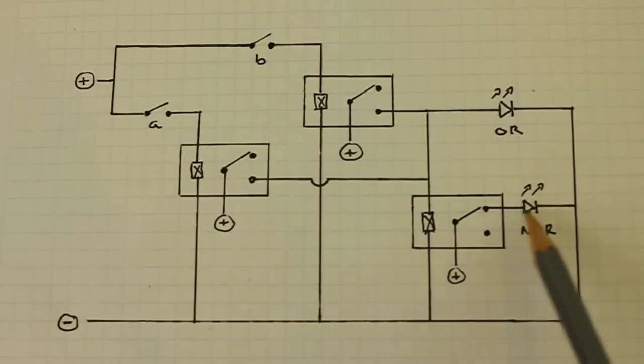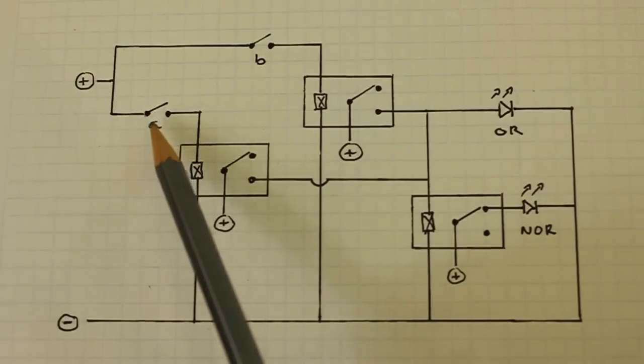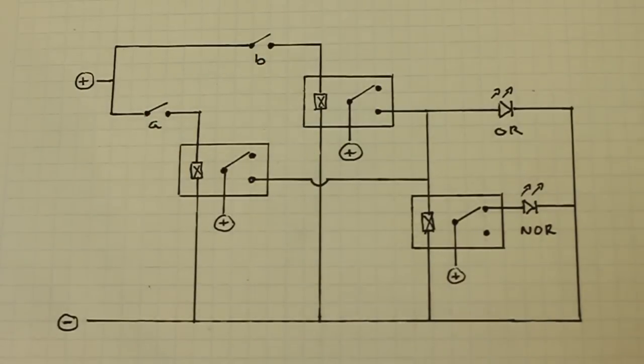De-energizing the NOR LED, which will be off. The next position is one zero. Switch A closed, switch B open.